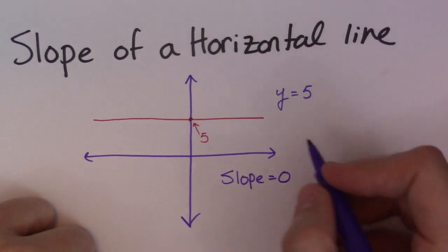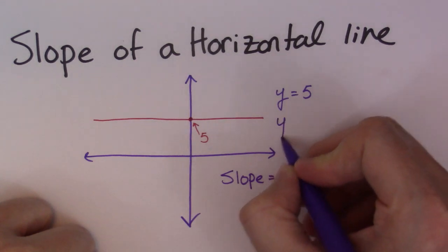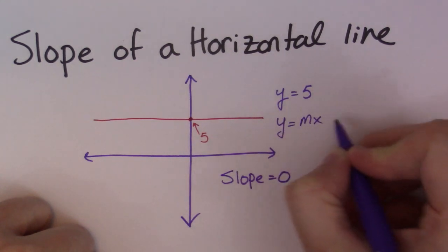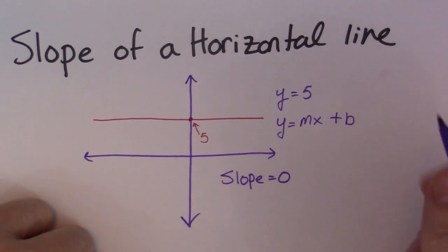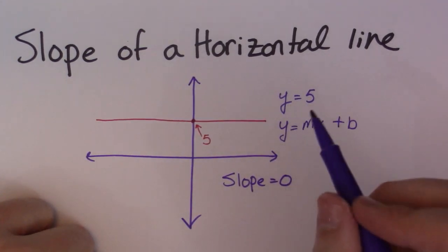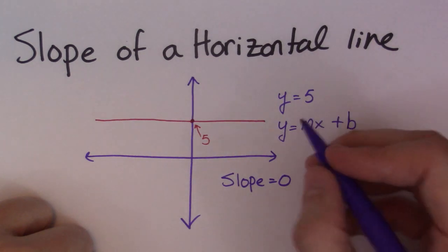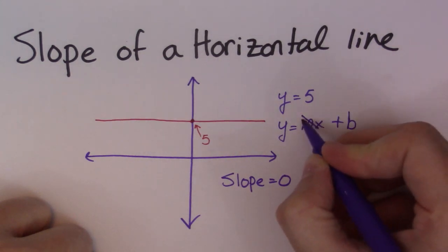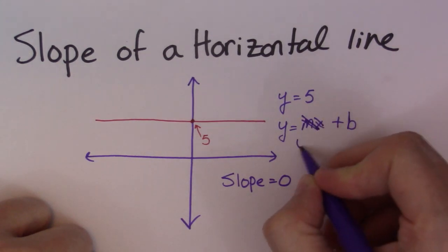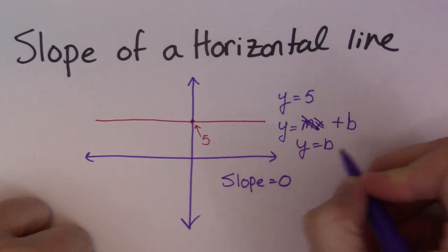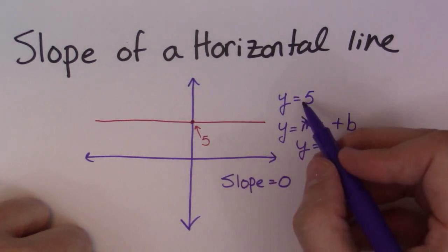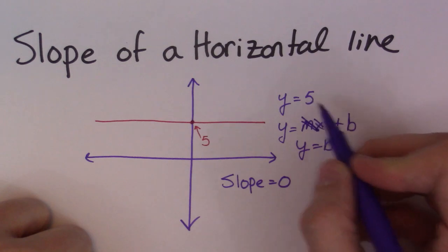So, another way we can kind of make sense of this is that if we have y equals mx plus b, which is slope intercept form, which I assume you've probably done if you're talking about this in your classes. If slope intercept form, if my slope was 0, this guy would disappear, and I'd be left with y is equal to b, which is the y intercept, which is exactly what we have here, the y intercept, y is equal to b.